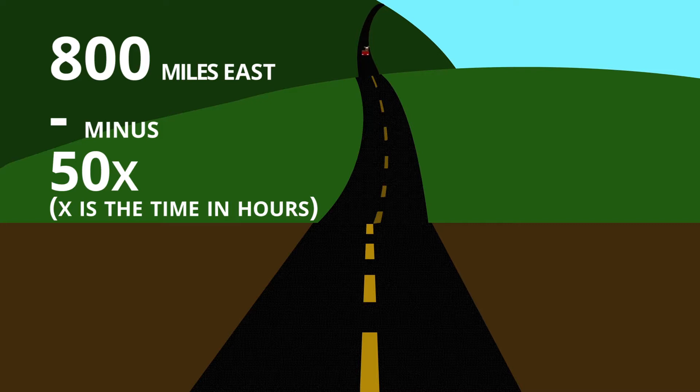So the distance from Springfield for car A will be the 800 original miles minus the 50 miles per hour times the amount of time the car has been traveling.